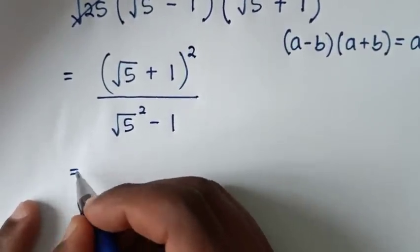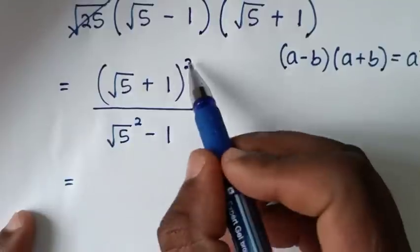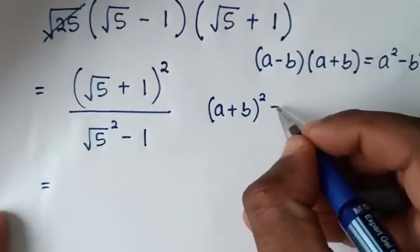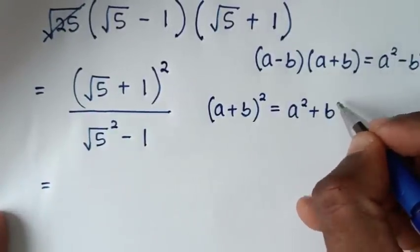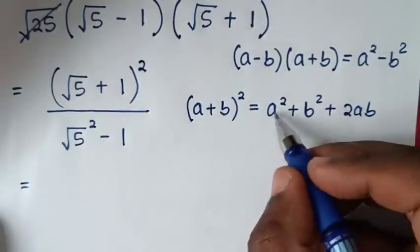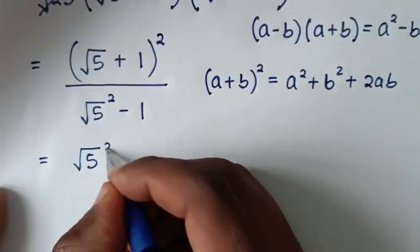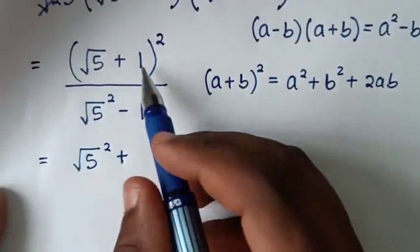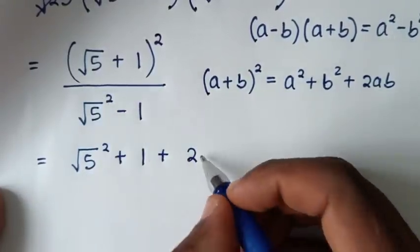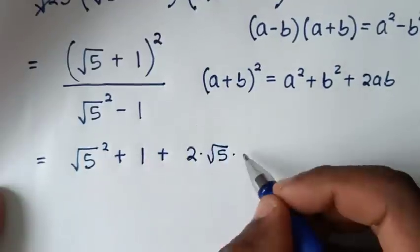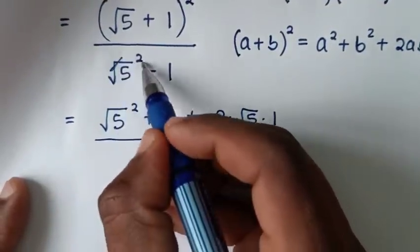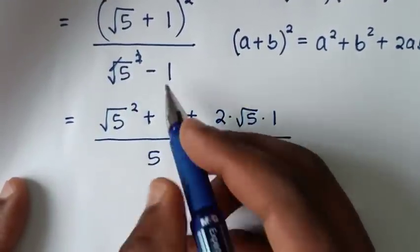We expand the numerator using (A + B)² = A² + B² + 2AB: that gives square root of 5 squared, plus 1 squared, plus 2 times square root of 5 times 1. The denominator simplifies as square root of 5 squared cancels to 5, minus 1.